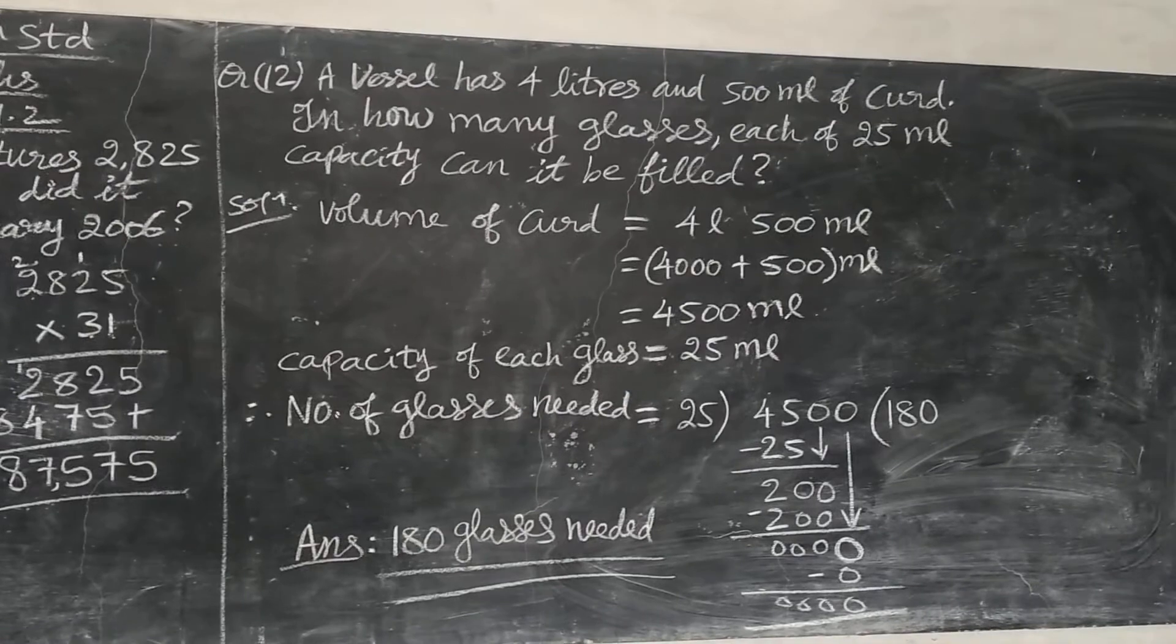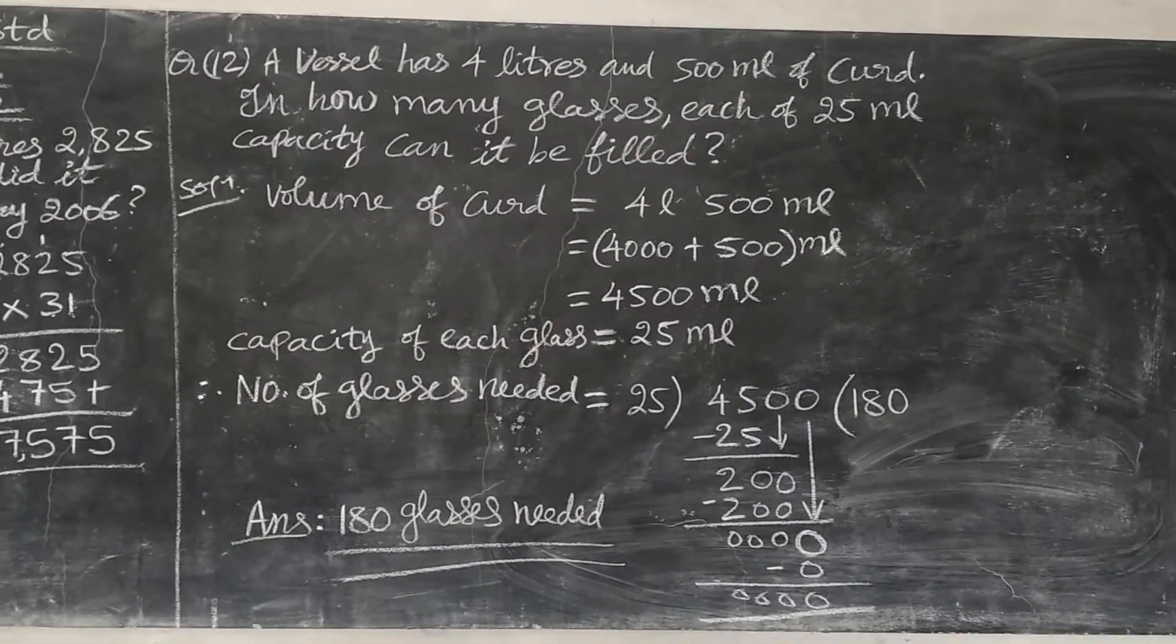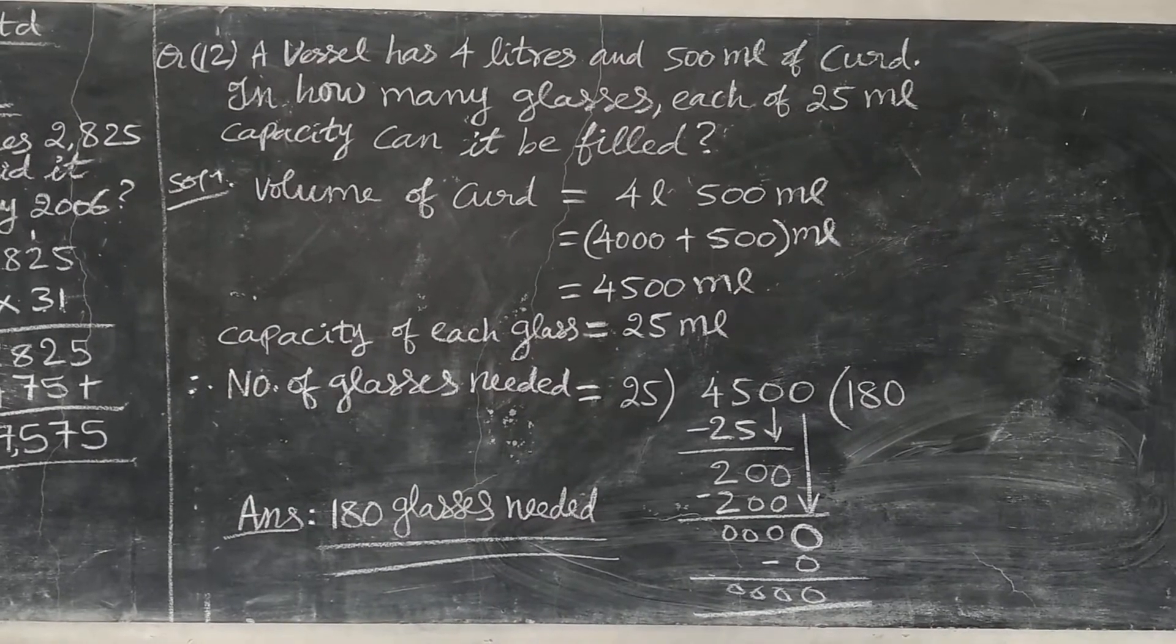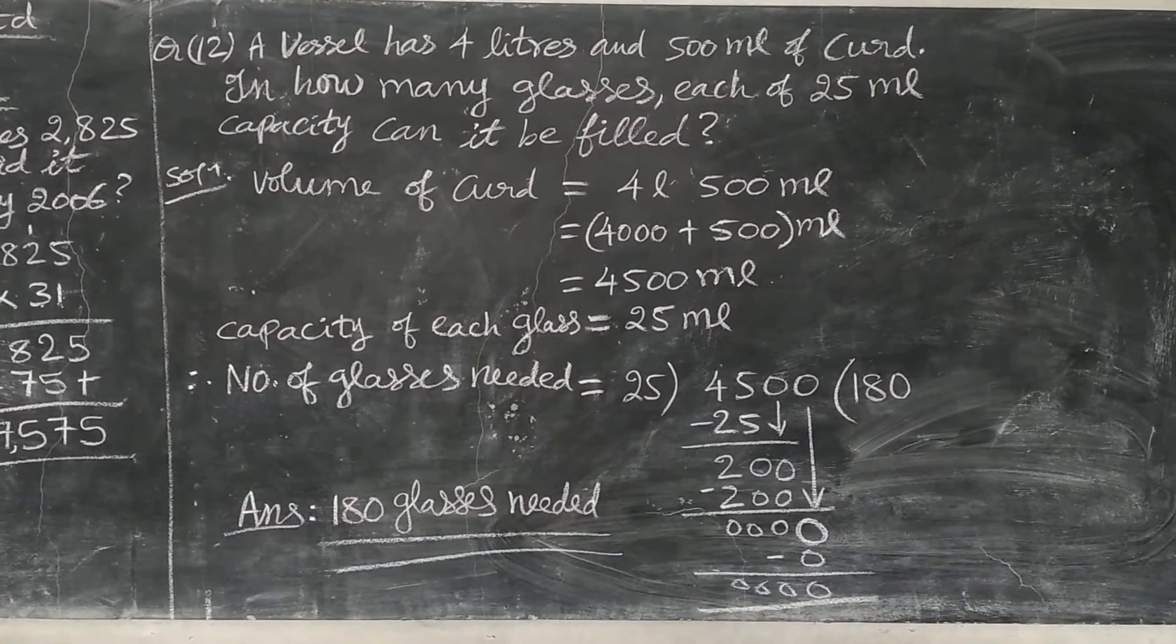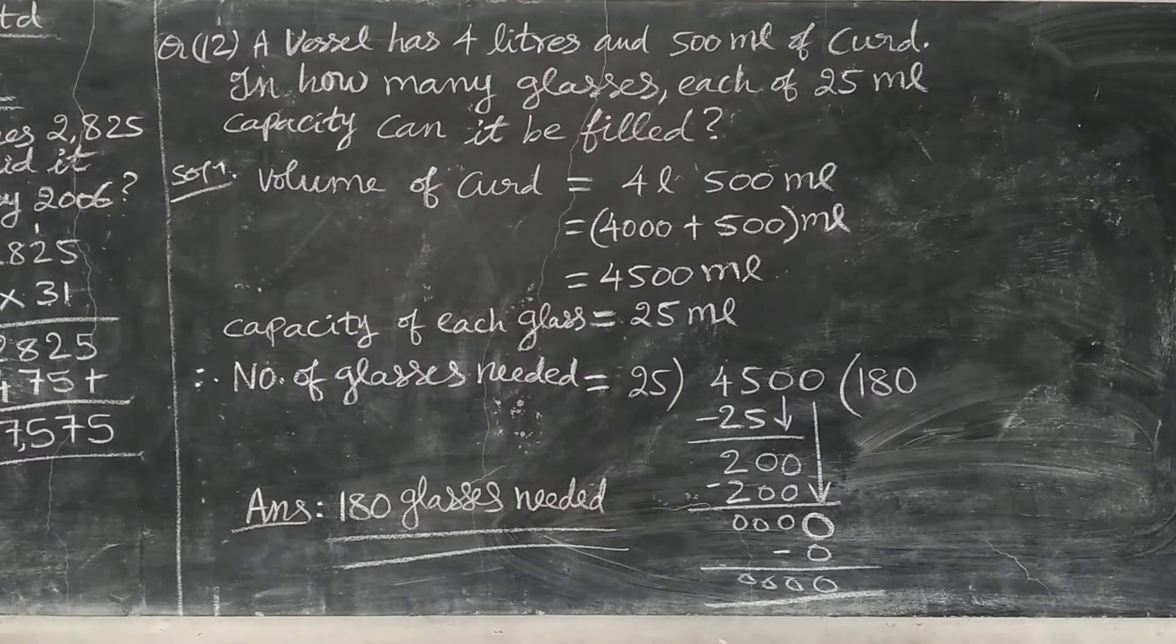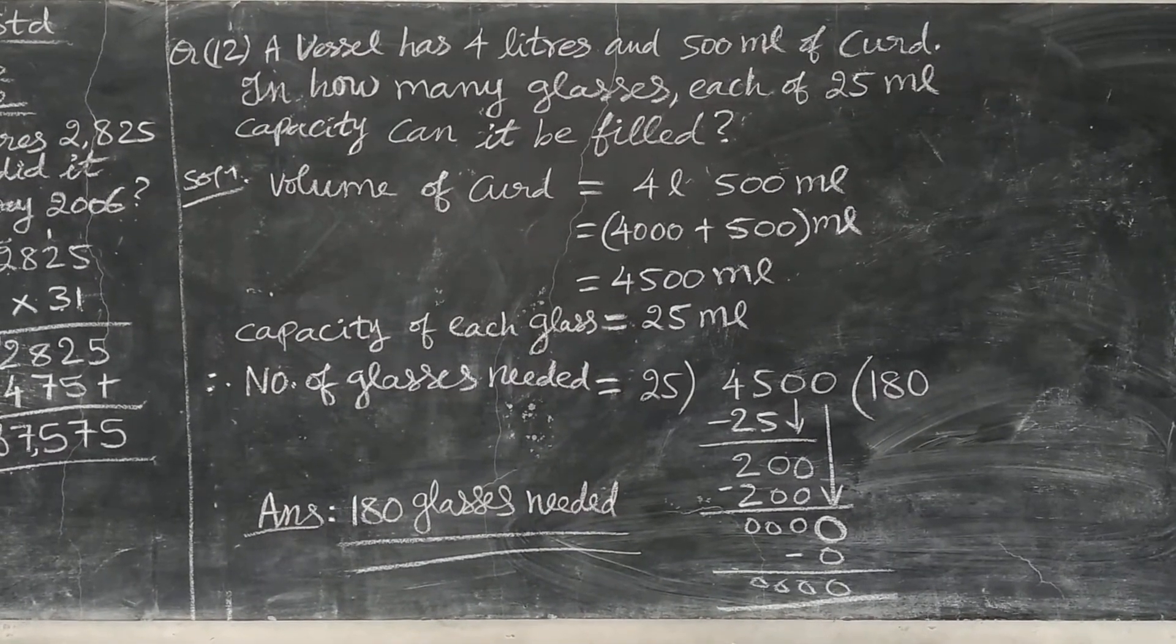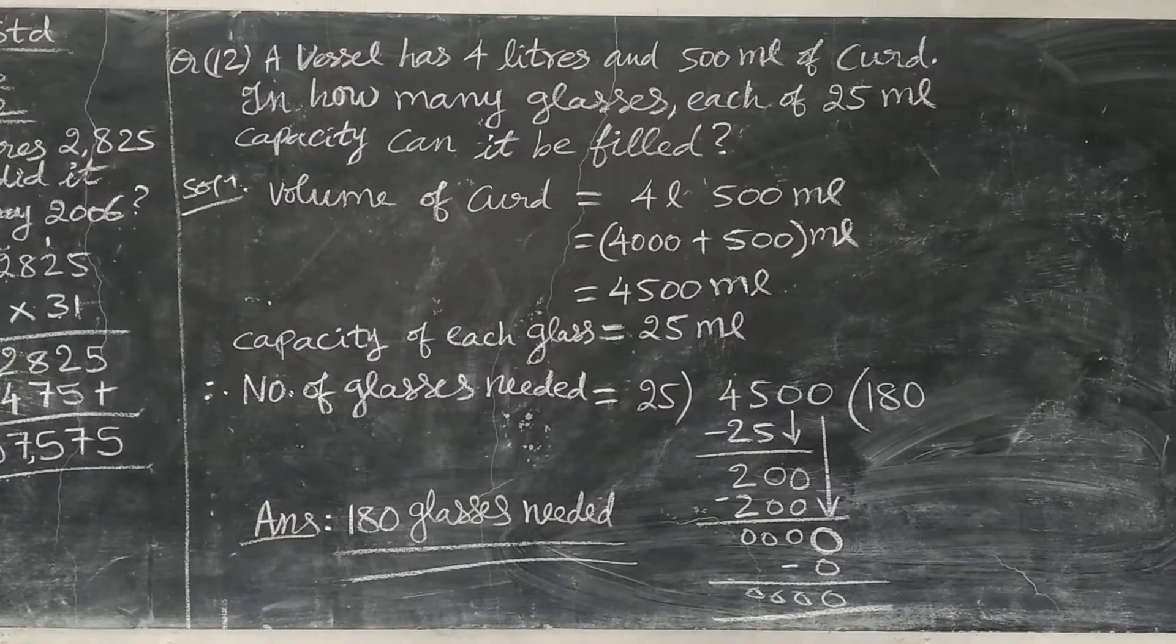Next, 12th problem. Last problem in this exercise. A vessel has 4 liters and 500 milliliters of curd. In how many glasses each of 25 ml capacity can it be filled? See, what is the volume of the curd having?